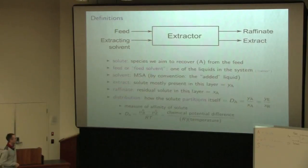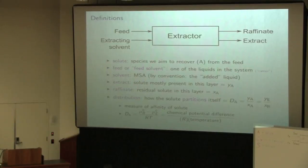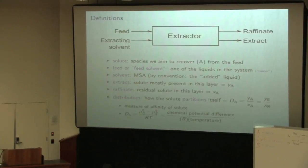So just a quick recap: we're taking our feed F, and our feed F has some solutes that we wish to recover. For example, our feed is primarily water and there's acetic acid in the water. Acetic acid is our solute, and then our carrier would be water in that case. We'll combine it with some solvent — in the case of acetic acid in water, the typical one is ethyl acetate. We'll combine ethyl acetate with our solvent and mix them very well.